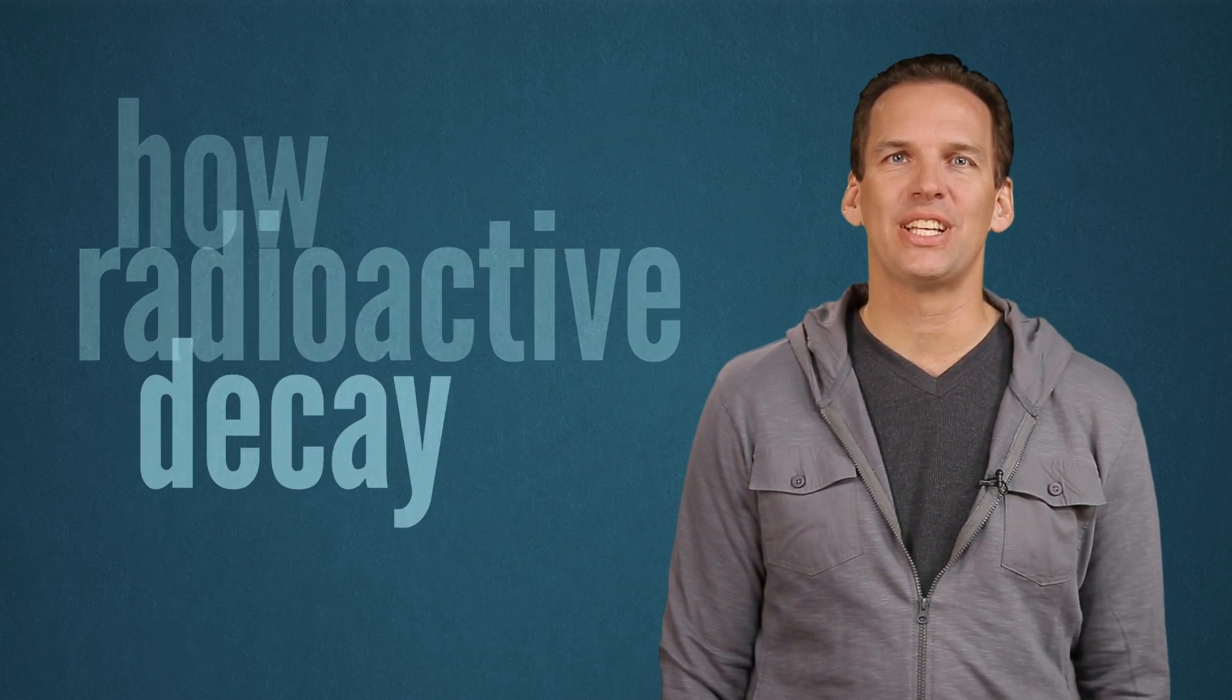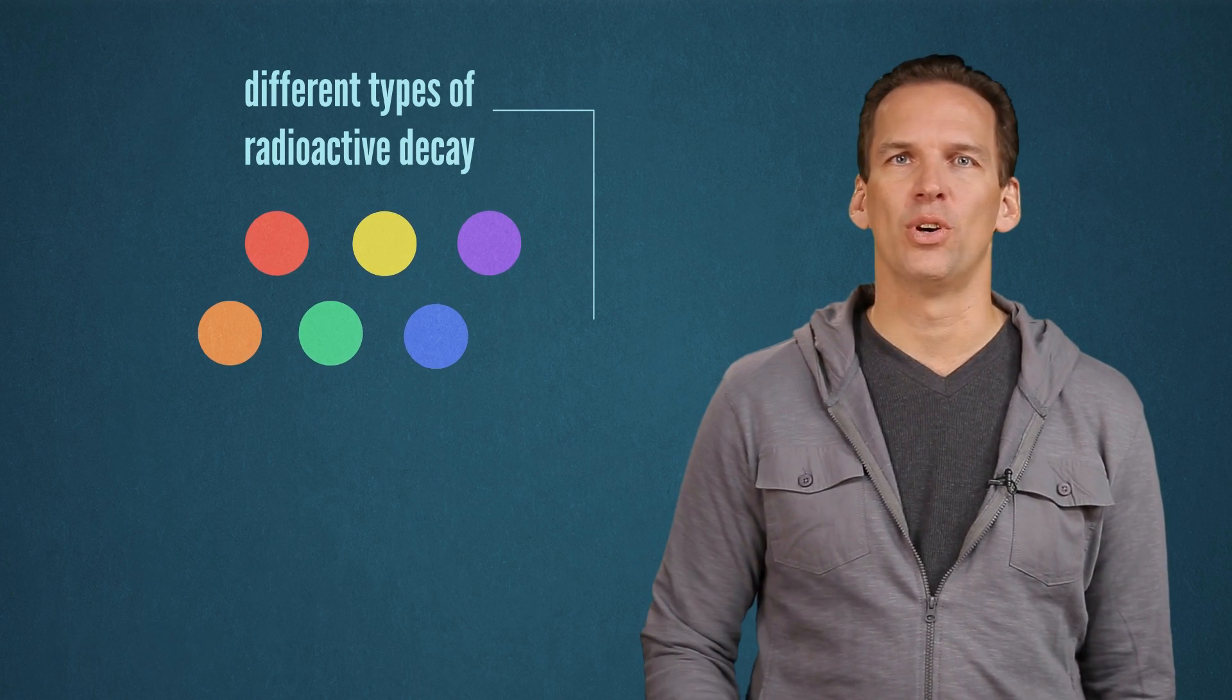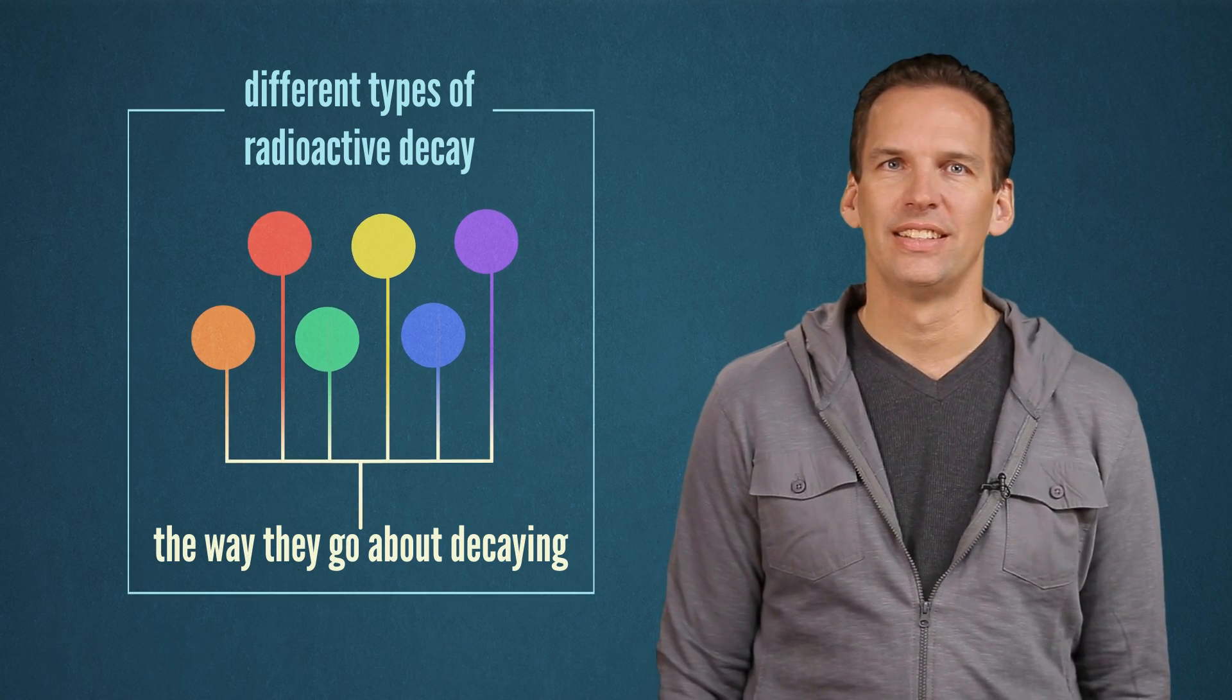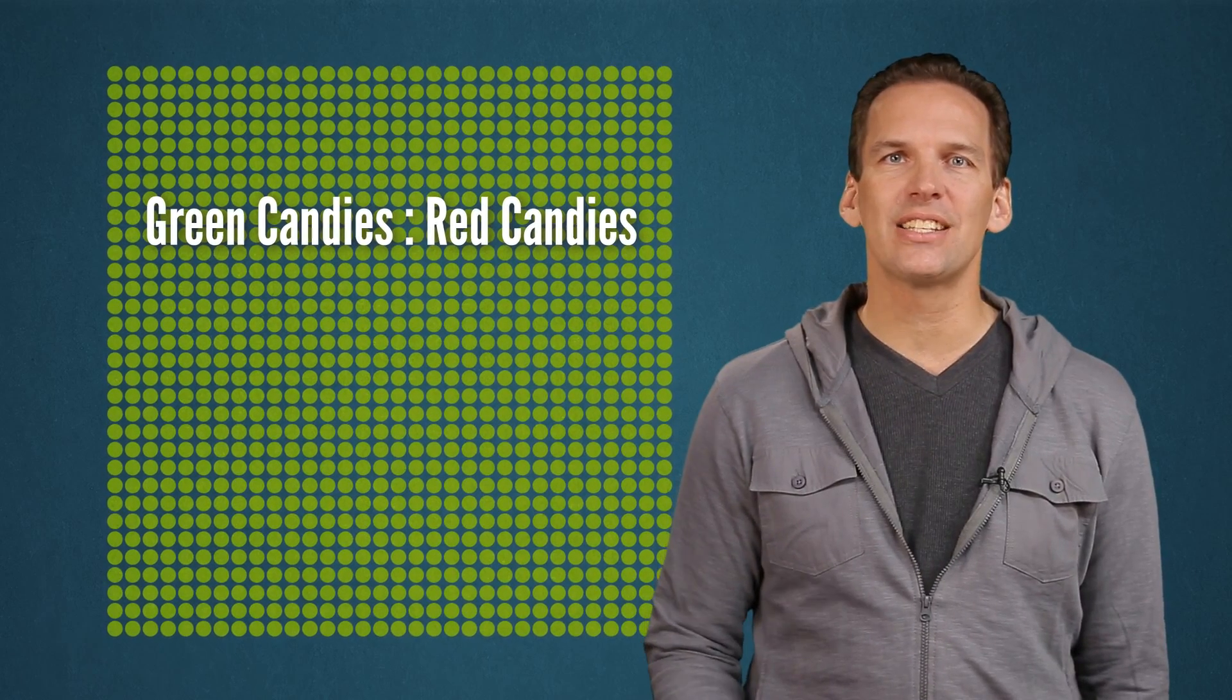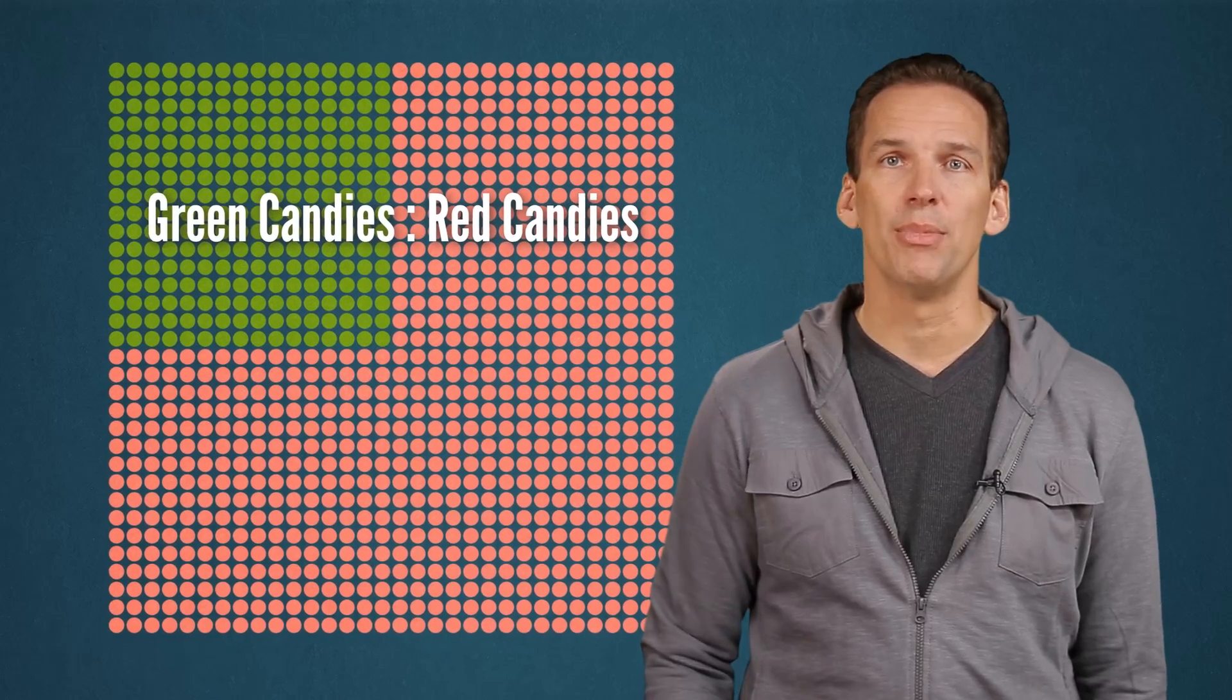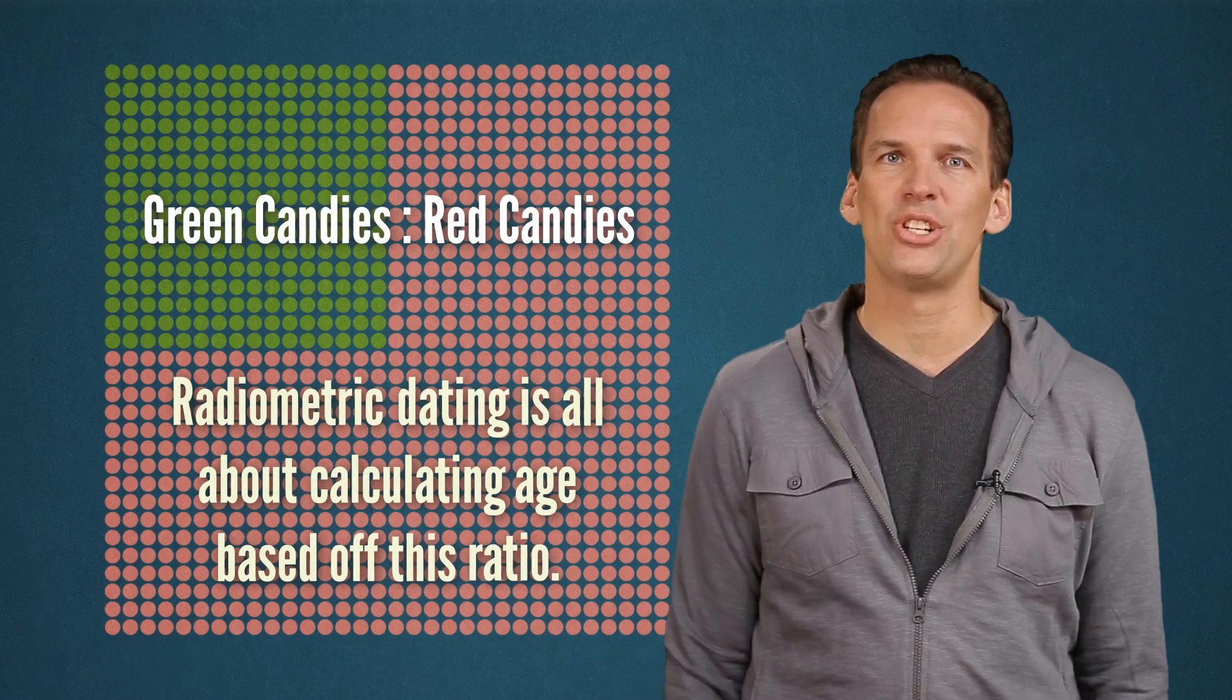Let's start by talking about some basics about how radioactive decay works. There are different types of radioactive decay, but the one thing that all forms of radioactive decay have in common is the way they go about decaying. Just like our example with the candies, as an element decays into something else, the ratio of elements that are present changes over time. Radiometric dating is all about calculating an age based off this ratio.